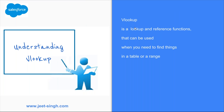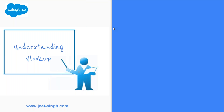VLOOKUP is basically used for searching values in a range of data or from a table of data. Before we actually start, I'm going to show you how to use this VLOOKUP function with an example. Let's quickly have a look at the parameters we need to work with while using this function. There are four parameters.